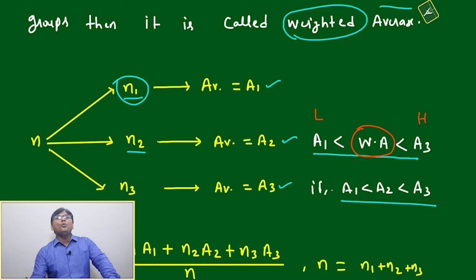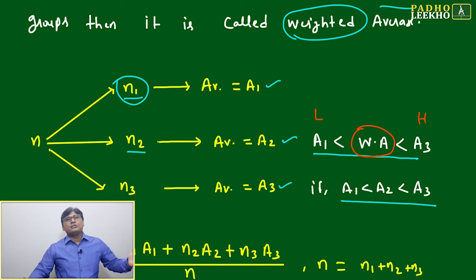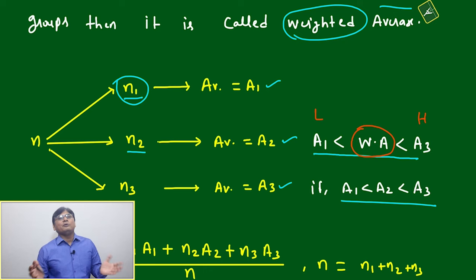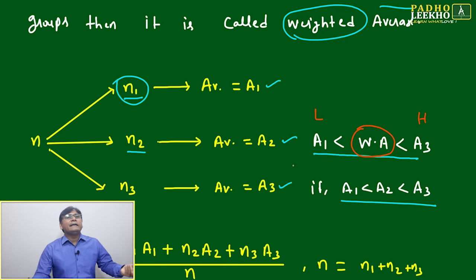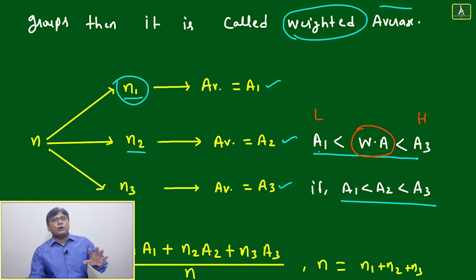That's a simple thing: weighted average cannot go beyond the lowest or higher than the highest. It will always be in between. This is one of the logical concepts that will help solve many data sufficiency questions, or you can apply this logical way to solve data interpretation or quantitative questions. This will be between A1 and A3 always.